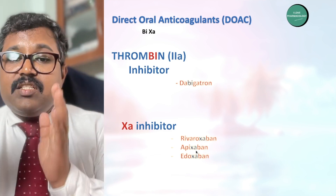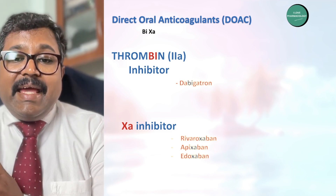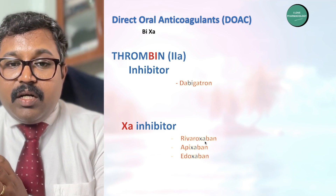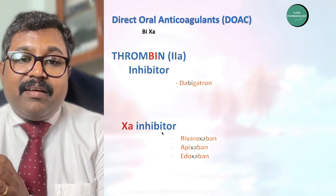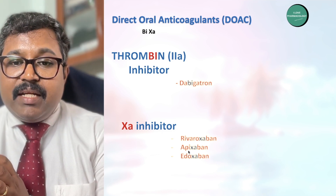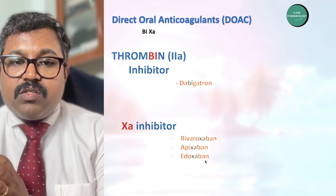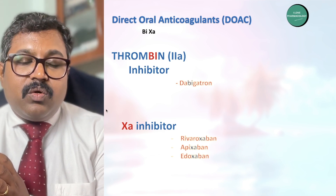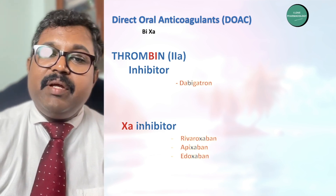Drugs that have 'XA' in their name belong to the factor 10A inhibitor group. Rivaroxaban, apixaban, and edoxaban all have 'XA' as a common factor, so they belong to the factor 10A inhibitor group.